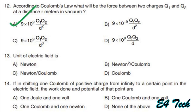Next: the unit of electric field is Newton per coulomb. Option C. Next: if in shifting one coulomb of positive charge from infinity to a certain point in the electric field, the work done is 1 joule, then the potential at that point is 1 volt. Option A: 1 joule and 1 volt.